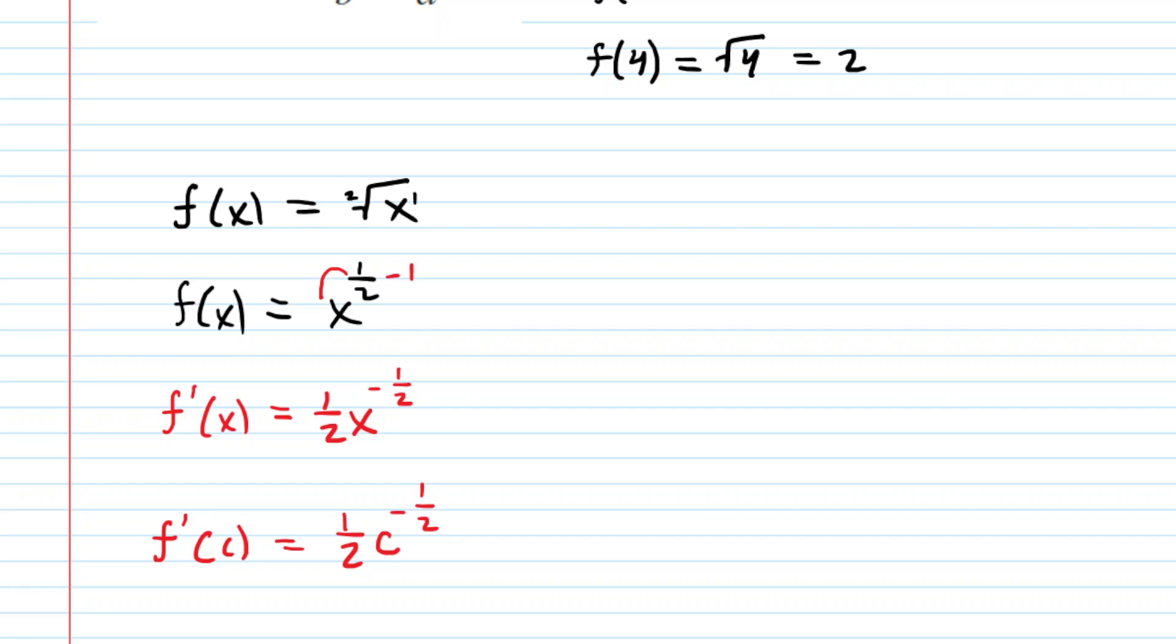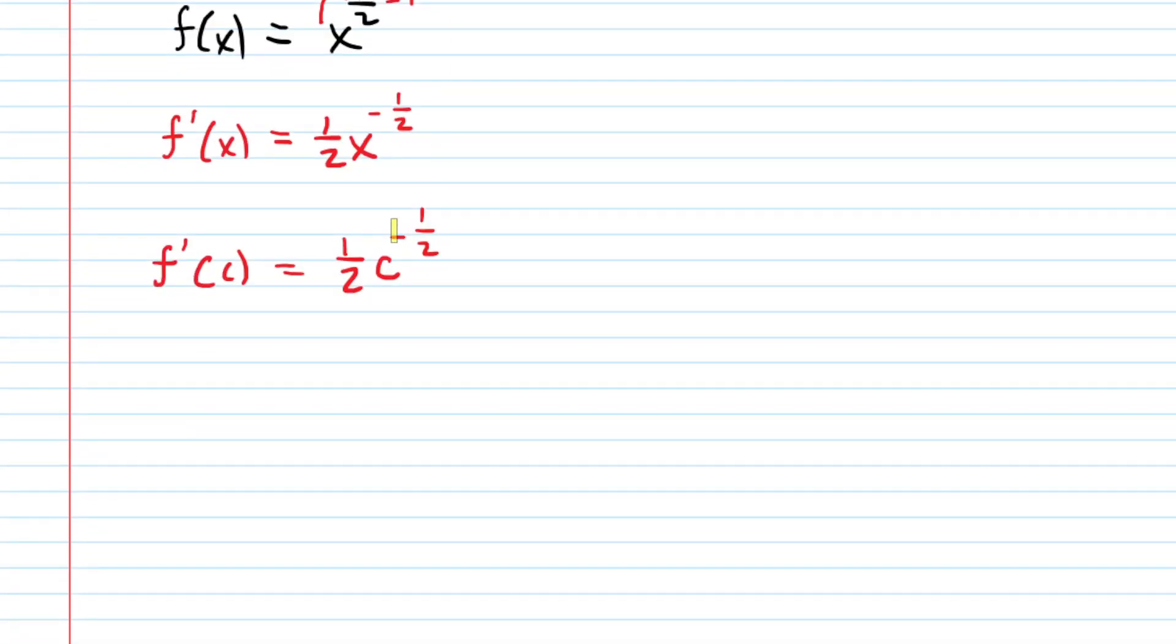And that's pretty good, but still we want to modify this. It's usually easier to take a negative exponent and rewrite it in terms of a positive exponent. So just a reminder about how that works. If you have c to the power of negative 1/2, you can rewrite that as 1 over c to the positive 1/2. So rewriting our f'(c) in this manner would give us 1/2 multiplied by 1 over c to the power of 1/2.